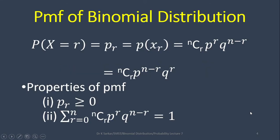The PMF or Probability Mass Function of Binomial Distribution: the probability at x equals to r is P(r) or P(x=r) which is nCr * p^r * q^(n-r). Alternatively, it can be written as nCr * p^(n-r) * q^r. Properties of PMF: (1) P(r) >= 0, and (2) the sum over r from 0 to n of nCr * p^r * q^(n-r) equals 1, or equivalently, the sum over r from 0 to n of P(r) equals 1.